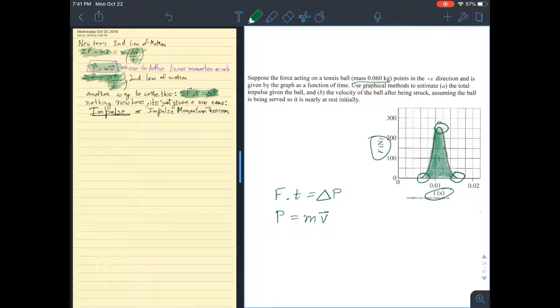So the question, the first question is the total impulse for the ball. Now what is impulse? We just thought about it even before we began the problem. Hey, impulse is simply force times time, which is the change in momentum. That is impulse. And we already said that the area under this graph is impulse.